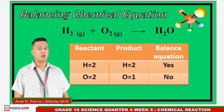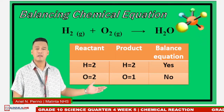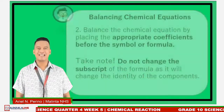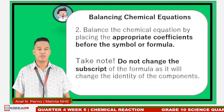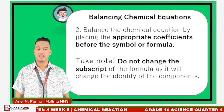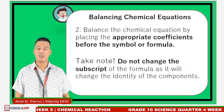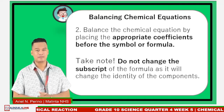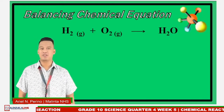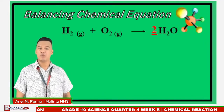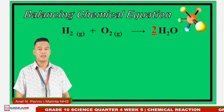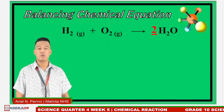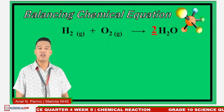Observe that the number of atoms are not balanced. To balance the chemical equation, place an appropriate coefficient before the symbol or formula. Do not change the subscript of the formula, as it will change the identity of the components. Let's try adding coefficient 2 to the product side to balance the oxygen atom. Remember, the coefficient multiplies both hydrogen and oxygen on the product side.